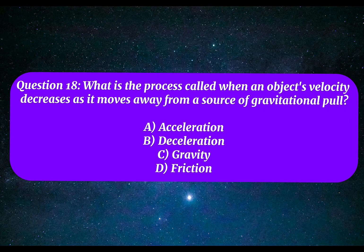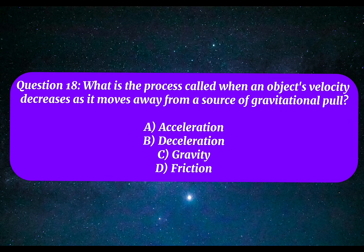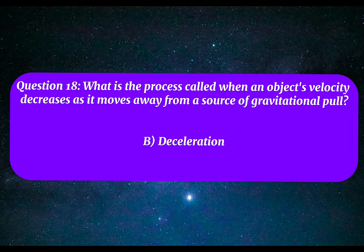Question 18. What is the process called when an object's velocity decreases as it moves away from a source of gravitational pull? A. Acceleration. B. Deceleration. C. Gravity. D. Friction. Correct answer: B. Deceleration.